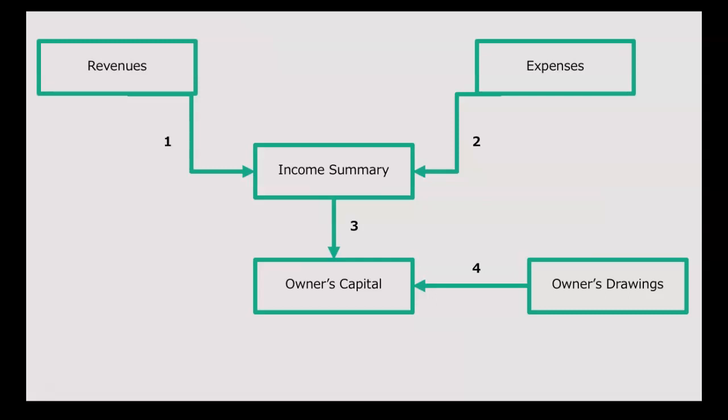You'll notice that revenues, expenses, income summary, and owner's drawings are the four accounts that are closed. Owner's capital is involved, but owner's capital is a permanent account. So things are closed to owner's capital, but owner's capital itself is never closed.